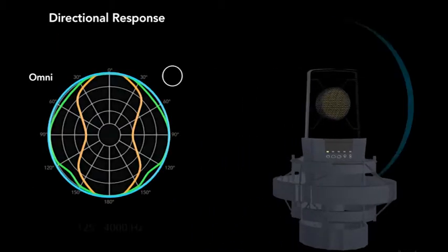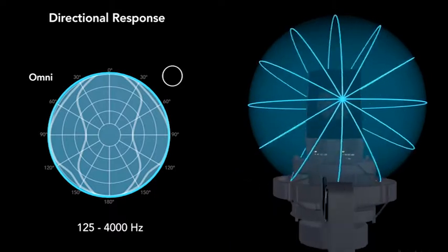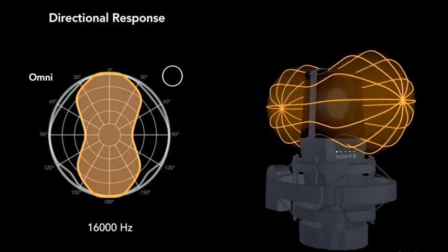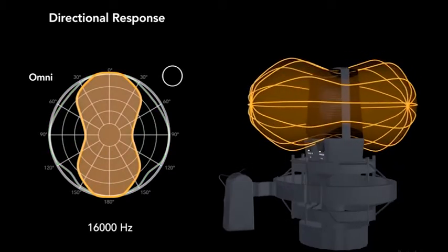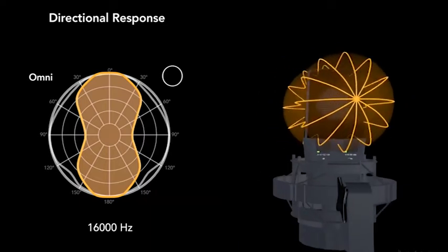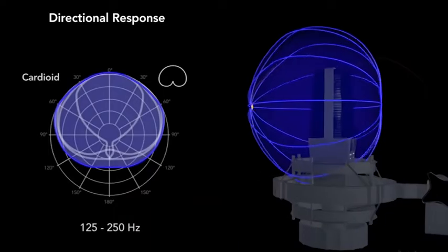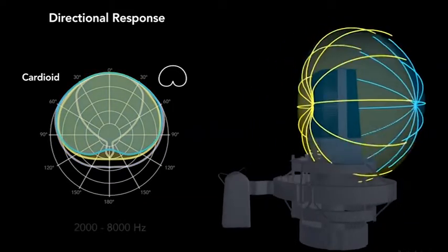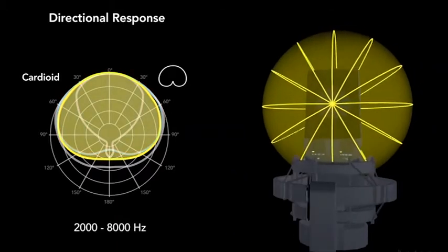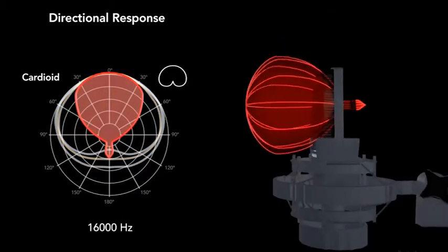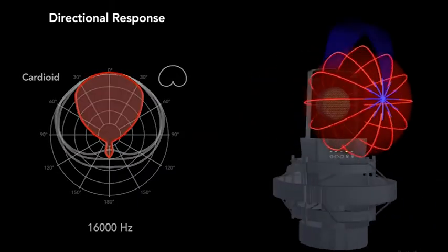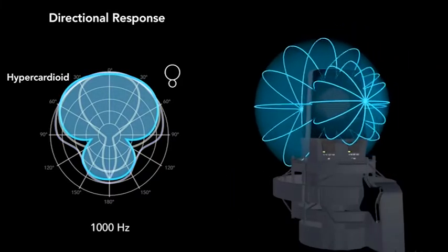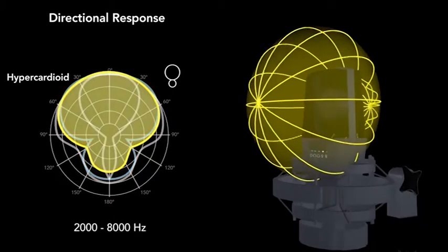An omnidirectional microphone picks up sound equally from all directions. That doesn't mean that the frequency response is equal in all directions, so it's still best to point an omni directly at the sound source for the most accurate pickup. Cardioid microphones pick up best from the front of the microphone but still pick up a bit to the side and the back, providing a more or less heart-shaped pattern, hence the name cardioid. A hyper cardioid mic is just a more directional version of a cardioid.